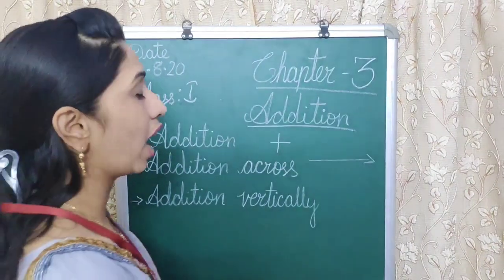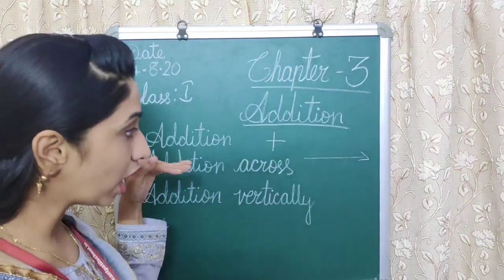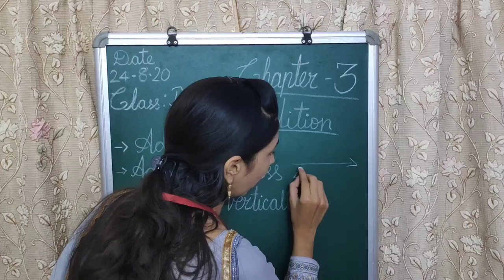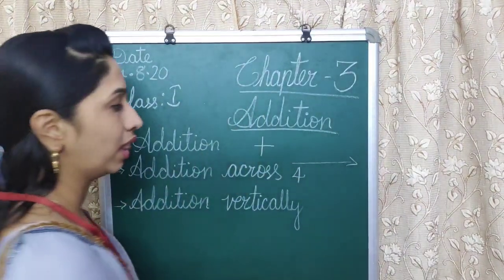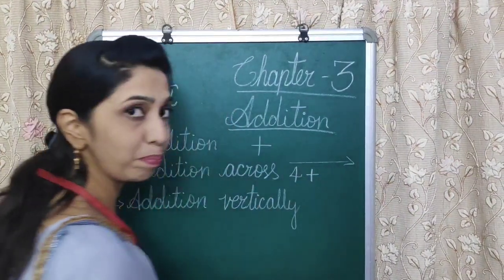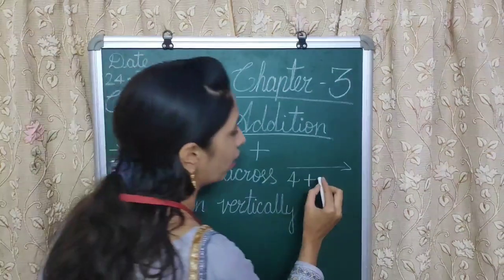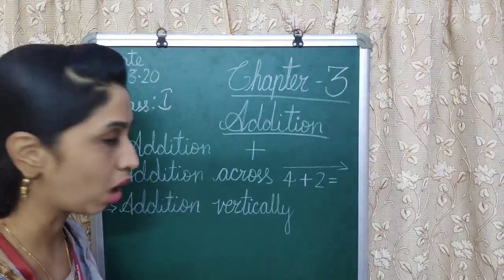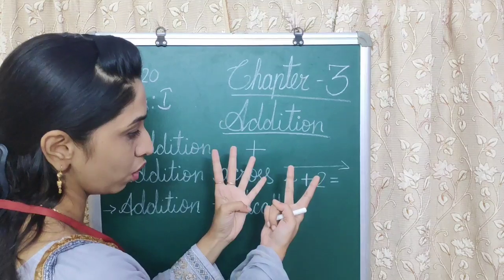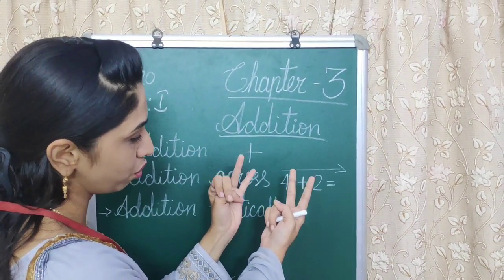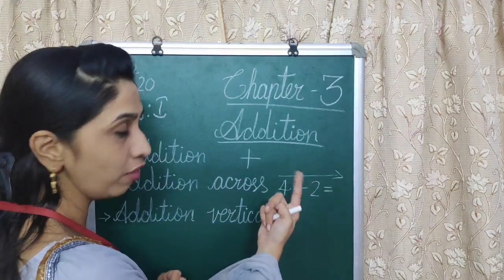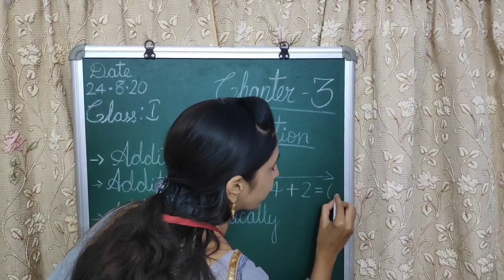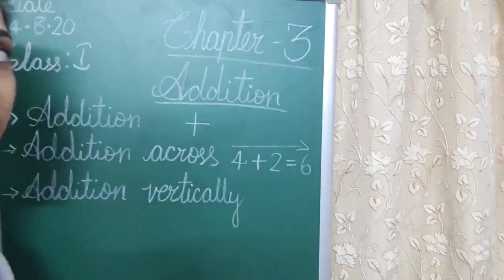Let us add 4 plus 2. We should arrange the numbers in a sleeping line way. First, I will write 4 at the left side, then the plus sign, then write 2 at the right side. Let us count the children: 4 plus 2 — count with me: 1, 2, 3, 4, 5, 6. We get 6. The result is known as the sum.